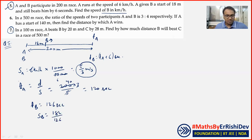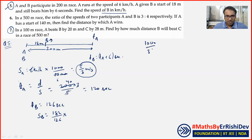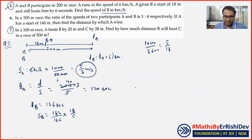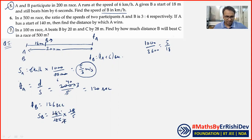ہم نے اس کو metres per second میں calculate کیا ہے۔ اب kilometre per hour میں convert کرنے کے لیے 18/5 سے multiply کرنا پڑے گا۔ 18 سے 126 cancel ہونا چاہیے — 18 × 7 = 126۔ پھر 7 اور 182 cancel ہوں گے: 7 × 26 = 182۔ تو آیا 26 upon 5 km per hour۔